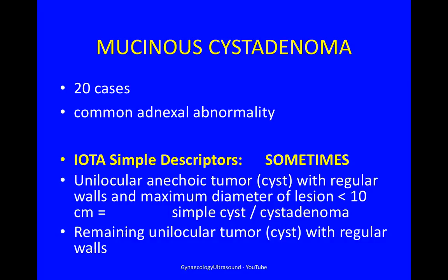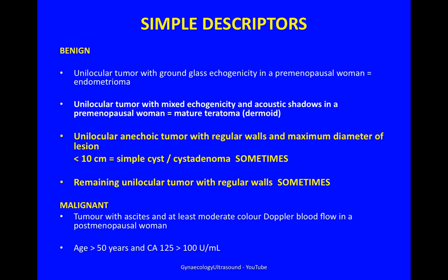Sometimes you will see immediately what the cyst is as a simple descriptor. If the cyst is unilocular and anechoic with regular walls, that is reflective of a simple cyst or cyst adenoma. Another simple descriptor is a remaining unilocular cyst with regular walls. To remind you, these are the six simple descriptors — four benign and two malignant — and occasionally mucinous cyst adenomas fit one of those two benign descriptors.